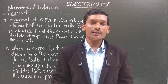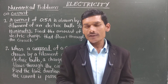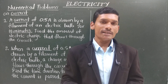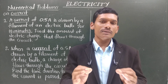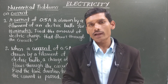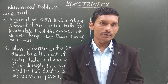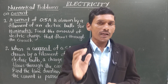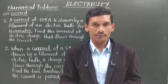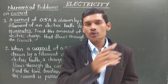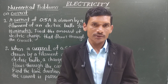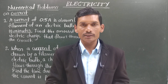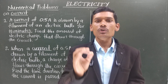Hello dear students, welcome to our YouTube channel Science GK Facts. In the previous video we have already studied what is electric current, what is the SI unit of electric current, what is charge and what is the SI unit of charge. We defined electric current as the amount of charge flowing through a particular area of a given metallic conductor in unit time, and wrote it as i = q/t.